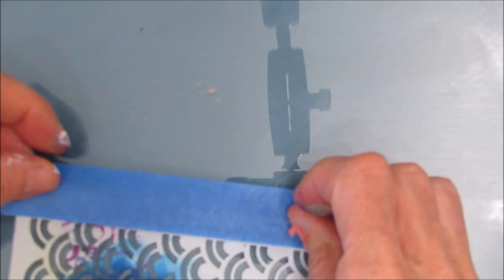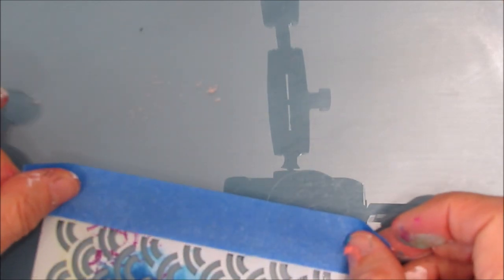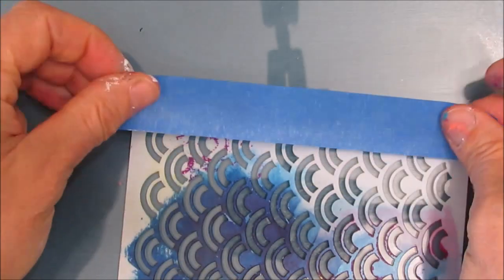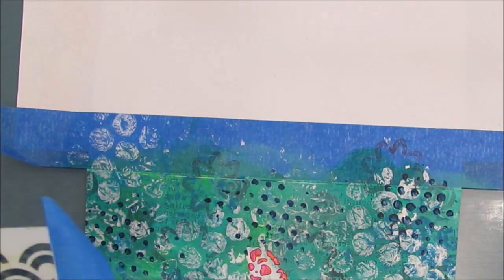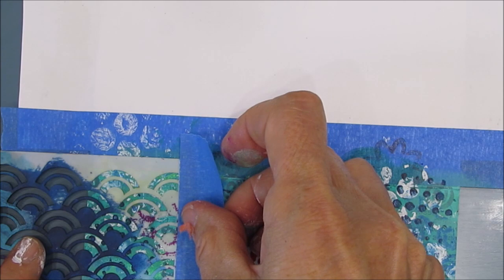I'm going to use this waves stencil from The Crafter's Workshop. This is one of their cake and cookie stencils. I'm going to use it to make a bit of a border design element on the page.